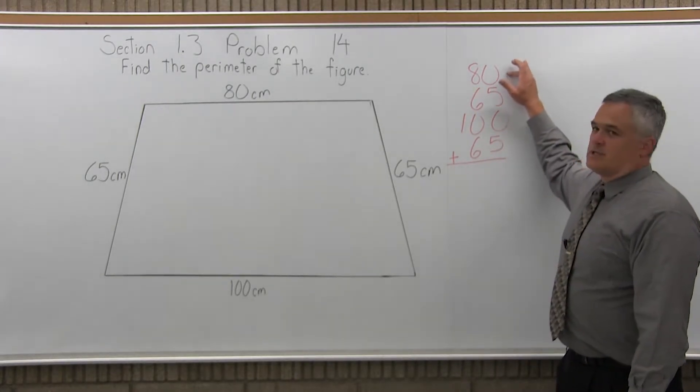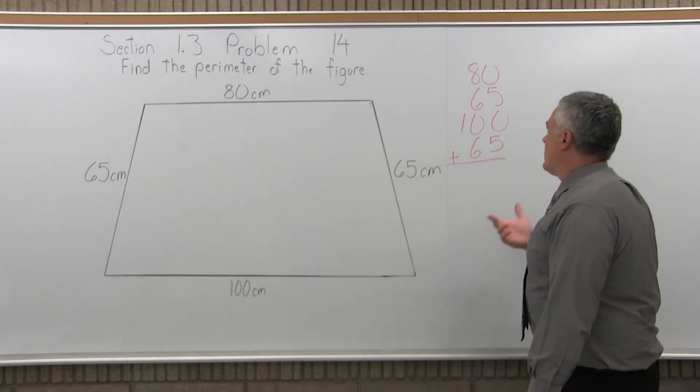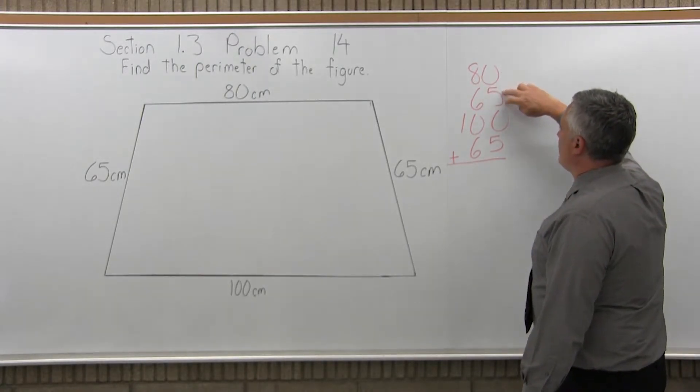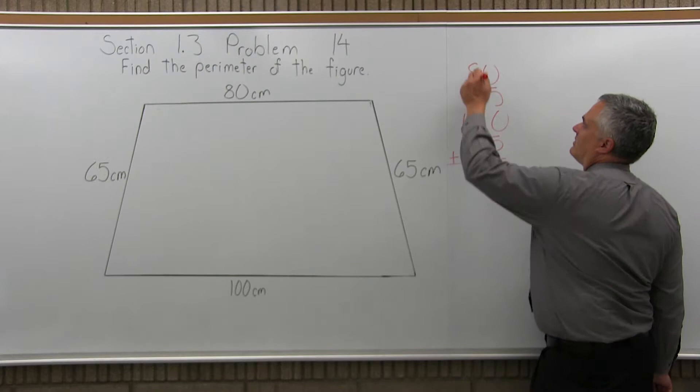You can put the 100 first if you want, or last, it doesn't matter, you'll get the same answer either way. So now I add them up. So, 0 plus 5 is 5, 5 plus 0 is still 5, 5 and another 5 is 10. So, for 10 we'll write the 0 from the 10, carry the 1.